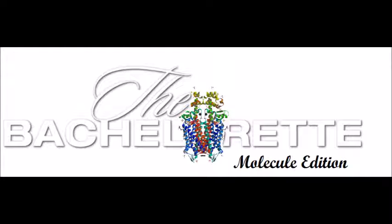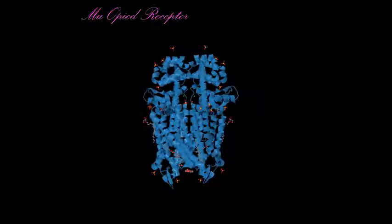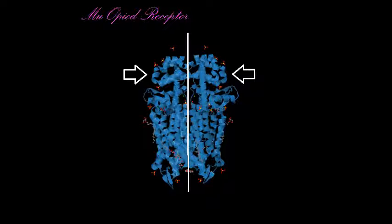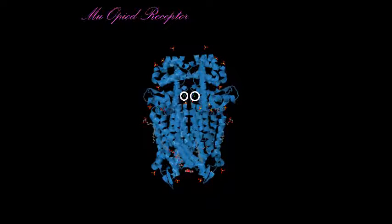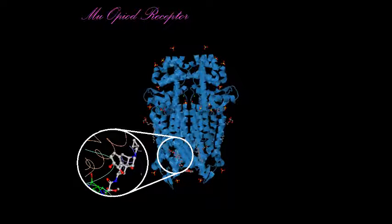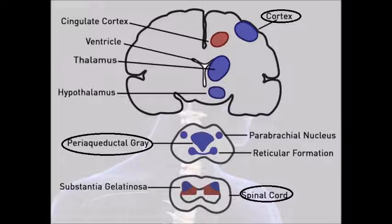And here she is — this mu opioid receptor, shown here in her twofold dimer through a four-helix bundle motif. She is also pictured with her friends sulfate and chlorine ion. Her crystal structure was taken with the aid of irreversible antagonist beta-FNA. She lives in the central nervous system with houses in the cerebral cortex, periaqueductal gray region, and superficial dorsal horn of the spinal cord.